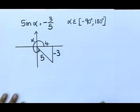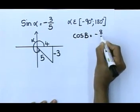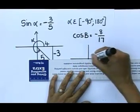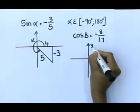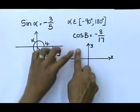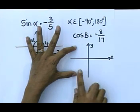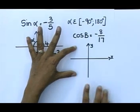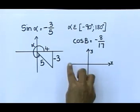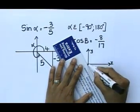For the second sketch: cos of beta equals negative 8 over 17. Draw your y-axis and x-axis. Cos is negative in the second and third quadrants, so you can draw in either. But once again, we cannot go to the third quadrant because the restriction says beta must be smaller than 180, and angles in the third quadrant are between 180 and 270. So I'm drawing my sketch in the second quadrant.